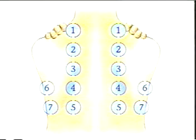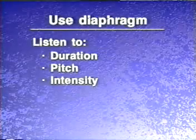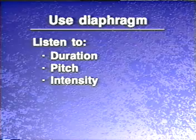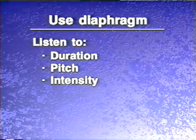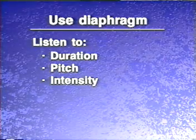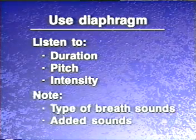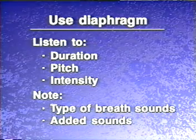To auscultate the posterior thorax, begin at the apices and proceed downward, moving systematically from side to side and comparing the sounds in symmetrical areas. Using the diaphragm of the stethoscope, listen to at least one entire breathing cycle at each location. Listen to the duration, pitch, and intensity of the inspiratory and expiratory sounds, decide what type of breath sounds you're hearing, and note any added sounds.